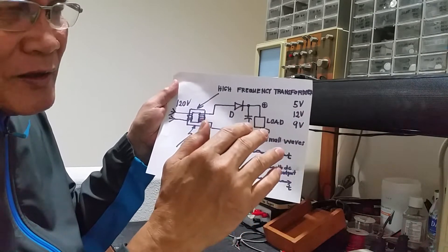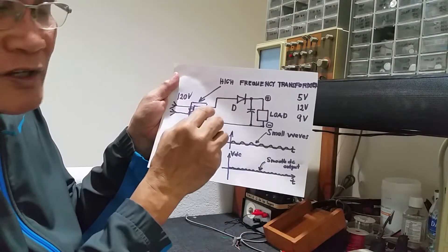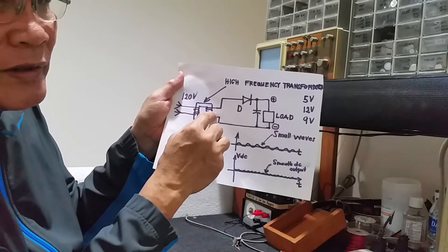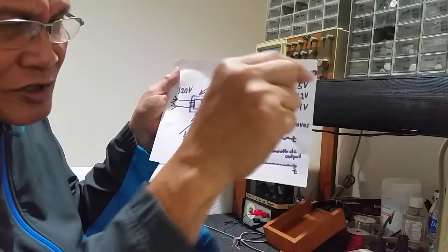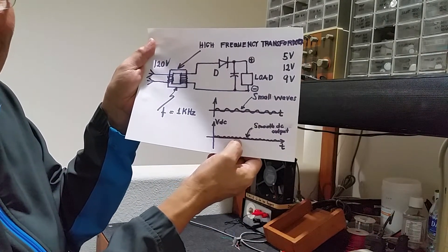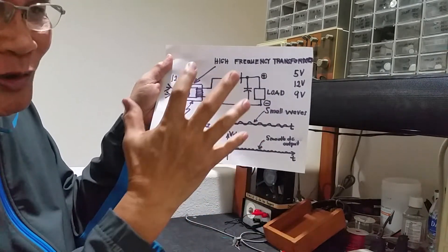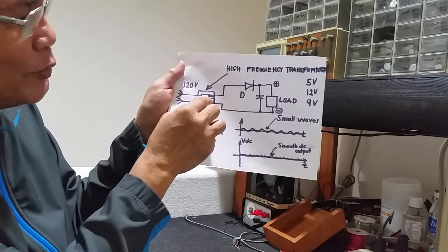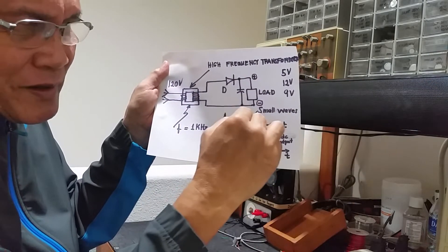One kilohertz will be good enough — higher than that will be even smoother. The frequency on the secondary side will be much higher than 60 hertz. If you design the secondary to have a frequency of one kilohertz, the alternating current coming out will be smoother — the magnitude of each alternation is smaller. The smaller the alternations, the easier it is to rectify.